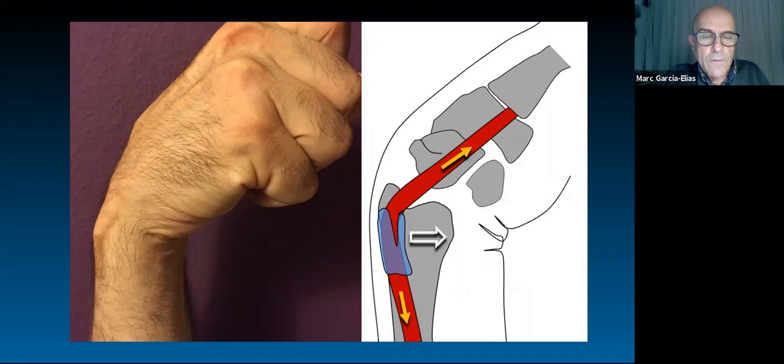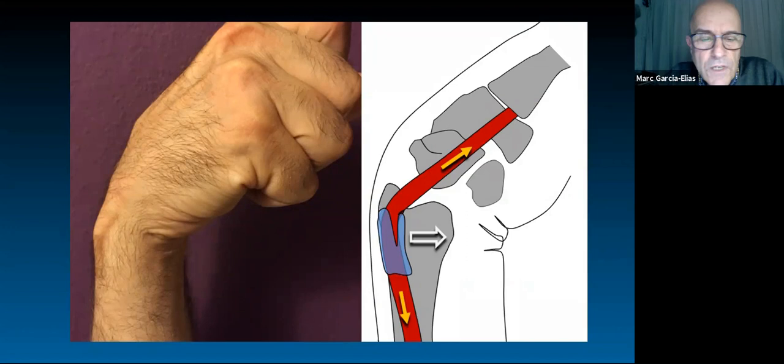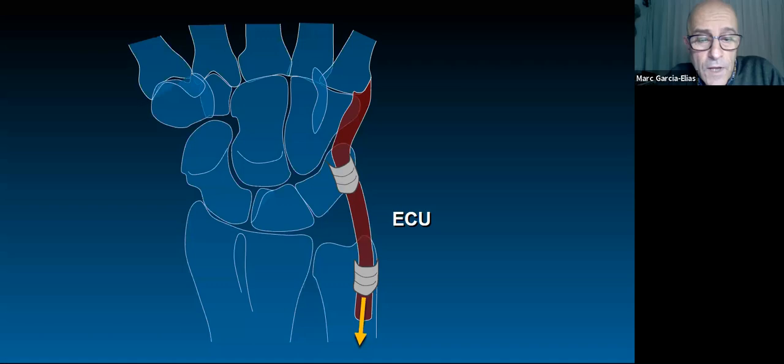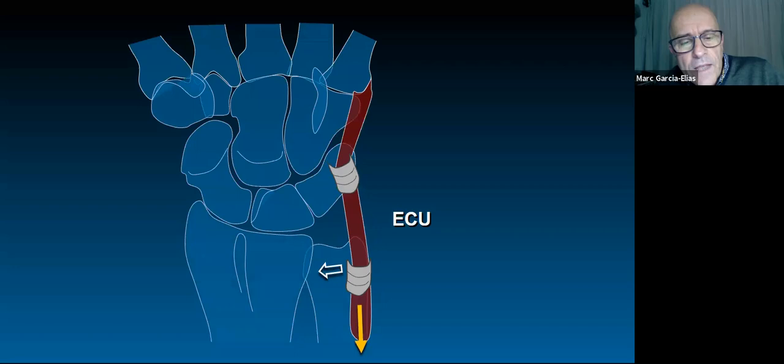The ECU tendon is constrained in a fairly narrow compartment at the dorsal aspect of the ulnar head. In pronation, when the tendon is located at the medial edge of the ulna, contraction of this muscle triggers dynamic compression of the ulnar head against the sigmoid notch of the radius.